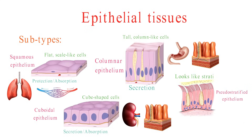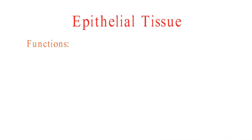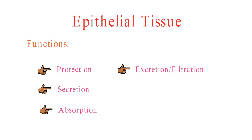Pseudostratified epithelium looks like it is stratified, but it is actually not. The cells are all connected at the base, but they vary in height. It is found in areas where there is a need for both protection and secretion, such as the lining of the respiratory tract. The functions of epithelial tissue vary depending on its location. Some of the most common functions include protection, secretion, absorption, excretion, filtration, sensory reception, and more.